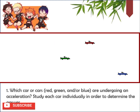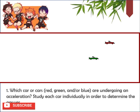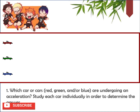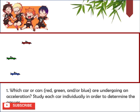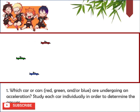Let's look at this diagram. Which car or cars are undergoing an acceleration? Study each car individually in order to determine the answer. If you inspect each car individually, you will notice that only the green and the blue cars accelerate. The red car moves with a constant speed, covering the same distance in each second of the animation, therefore the red car is not accelerating. The green and blue cars are speeding up, thus covering an increasing distance in each second of the animation.